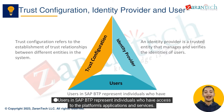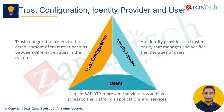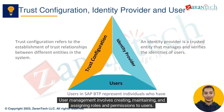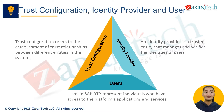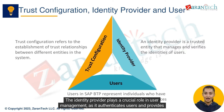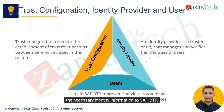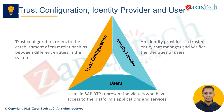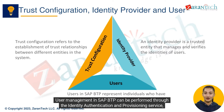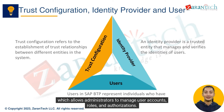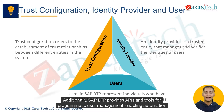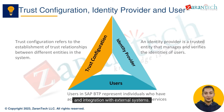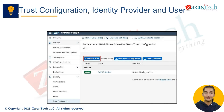Users in SAP BTP represent individuals who have access to the platform's applications and services. User management involves creating, maintaining, and assigning roles and permissions to users. The identity provider plays a crucial role in user management as it authenticates users and provides the necessary identity information to SAP BTP. User management can be performed through the Identity Authentication and Provisioning Service, which allows administrators to manage user accounts, roles, and authorizations. Additionally, SAP BTP provides APIs and tools for programmatic user management, enabling automation and integration with external systems.